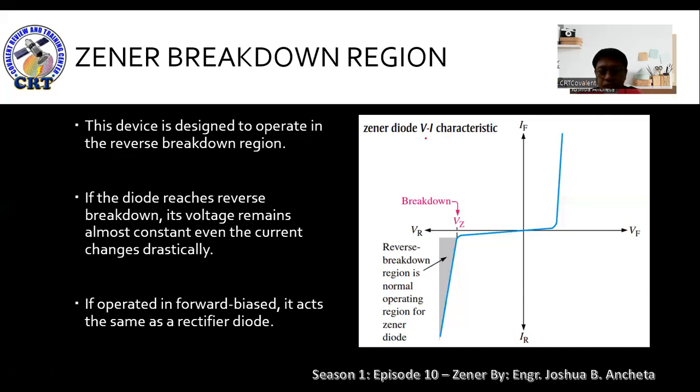Let us discuss the VI curve, the voltage current characteristic of the Zener Diode. This device is designed to operate in the reverse breakdown region. If the diode reaches reverse breakdown, its voltage remains almost constant even if the current changes drastically. If operated in forward bias, it acts the same as a rectifier diode. But the main highlight of the Zener Diode is to focus on the reverse breakdown region.